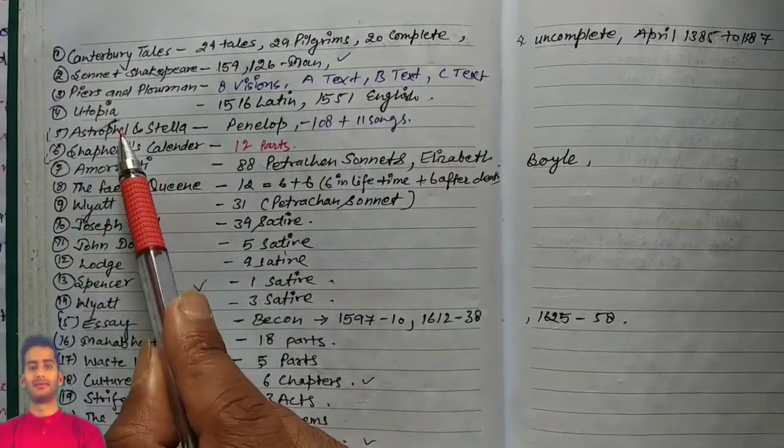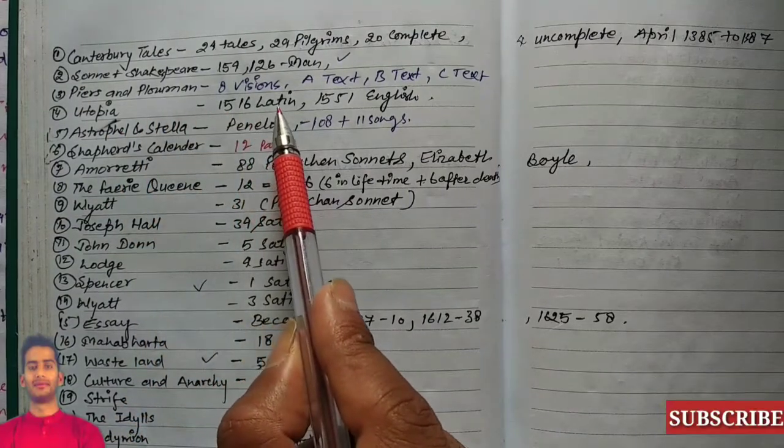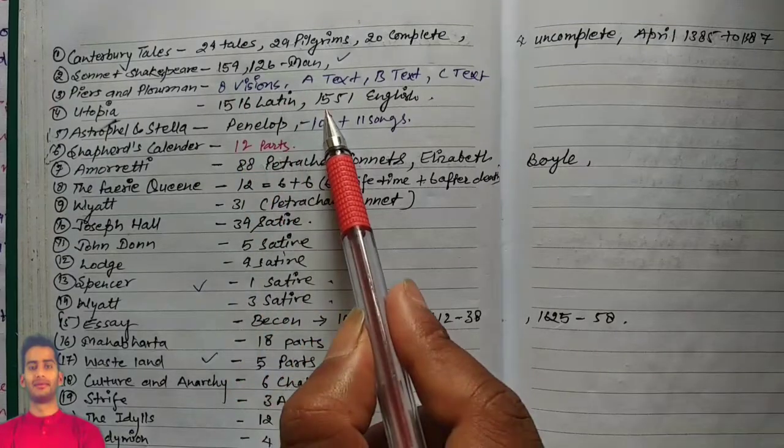Utopia: Utopia was written in 1516 in Latin language, but in 1551 it got translated into English.